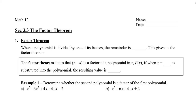In this video, we're going to take a look at the Factor Theorem. When a polynomial is divided by one of its factors, the remainder should be 0. So this gives us the Factor Theorem, which states that if x minus a is a factor of a polynomial in x, and when x is a — that number — is substituted into the polynomial, the resulting value is 0.